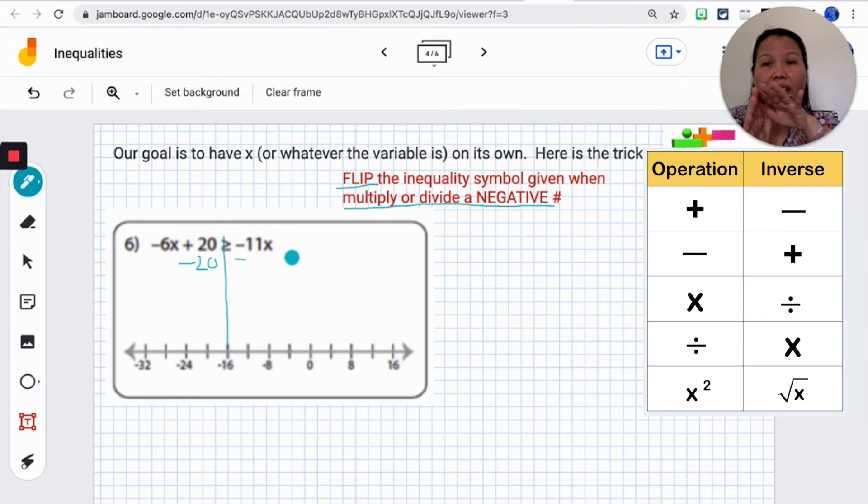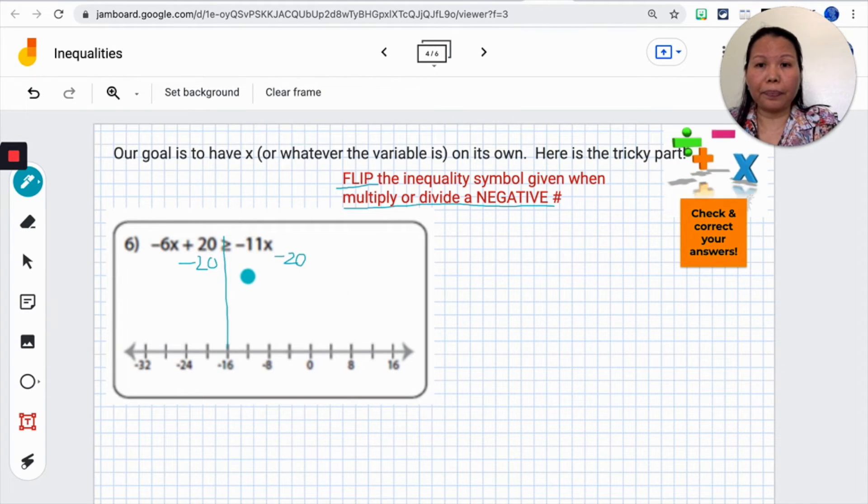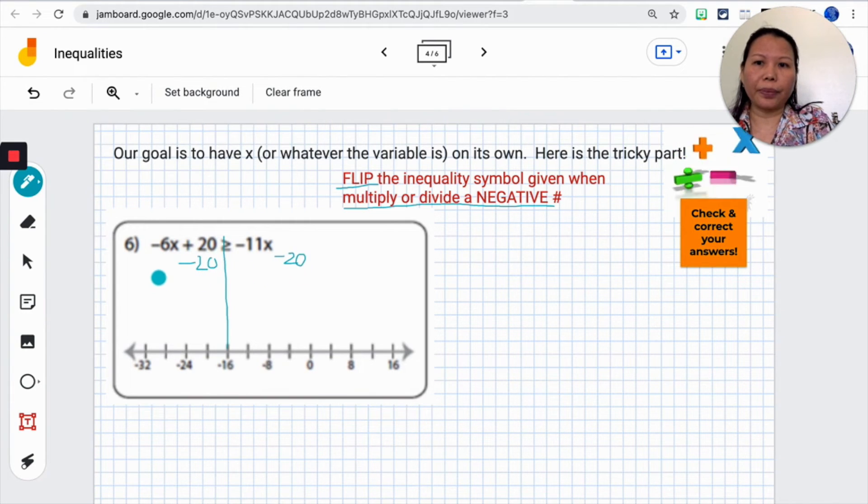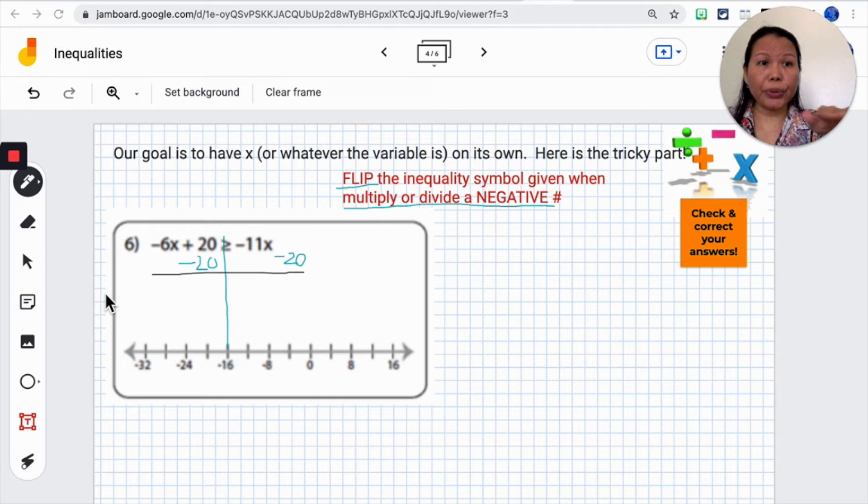With the variable on both sides, what I would do is I would still try to get the number onto this side, the variable on the left side. Instead of writing 20 right underneath the minus or negative 11x, I'm going to write it slightly off because I know that they're not going to be like terms. It doesn't have the x. So I'm not going to combine with the negative 11x over here. I'm just going to write it over here. Draw a black line underneath to simplify.